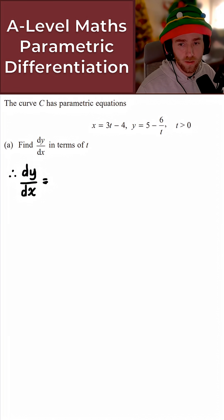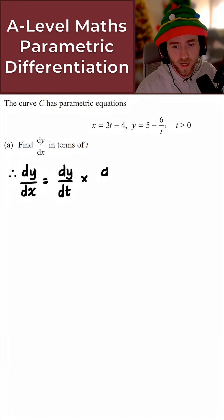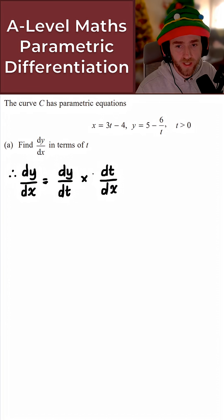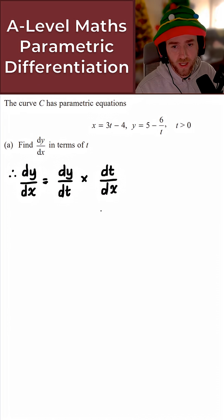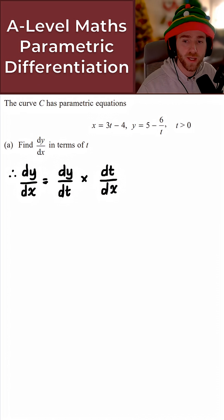To begin with, let's recall using parametric differentiation that dy/dx is simply dy/dt times dt/dx. So what we need to do is find dy/dt and also dt/dx, and from there we can easily find dy/dx.